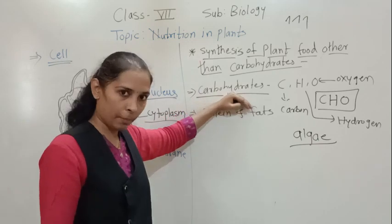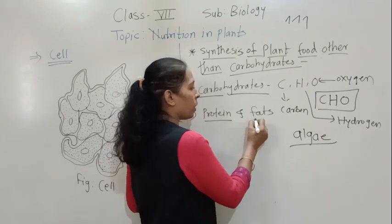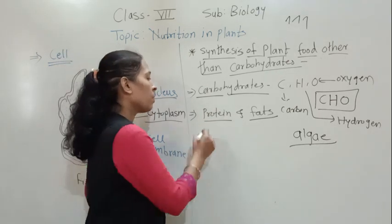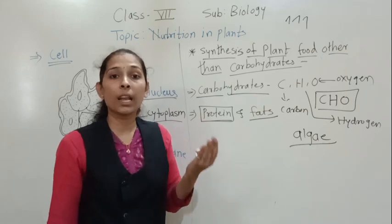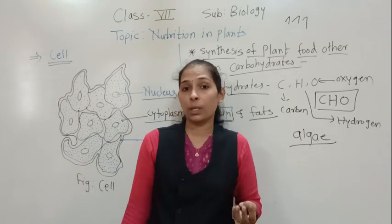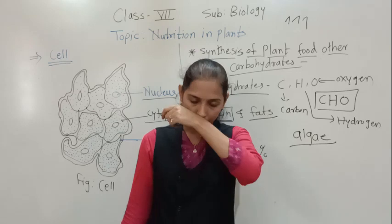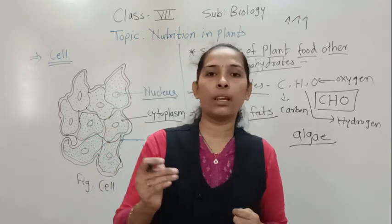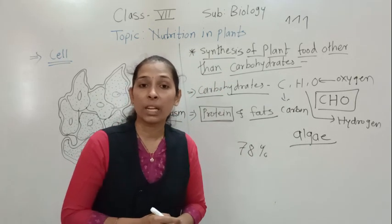The plant can make carbohydrate, but along with that, plants also prepare proteins and fats. Plants can make proteins and fats as well. Protein is a nitrogenous substance — to prepare protein, nitrogen is required. From where do plants get nitrogen? In the atmosphere, there is 78% nitrogen gas, present in the air in abundance. But that nitrogen which is present in the air is not directly utilized by the plant — the plant cannot utilize the nitrogen directly from the air.